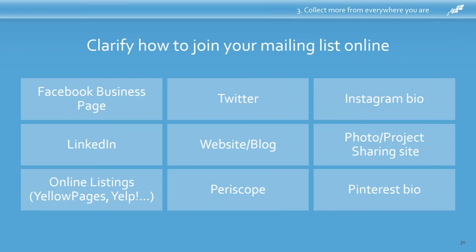Clarify how to join your mailing list online — there are a lot of different ways. Whether it's a Facebook business page, Twitter, Instagram, LinkedIn, websites, photo sites, yellow pages, Periscope, Pinterest, or all those places, there's a spot where you can say here's who I am, here's what I do, and at the very end say: by the way, I have an email list, I have a free gift if you join, here's what you get, go here to claim it. If you need help with this, I know it's overwhelming — feel free to reach out and we'll get you settled up.